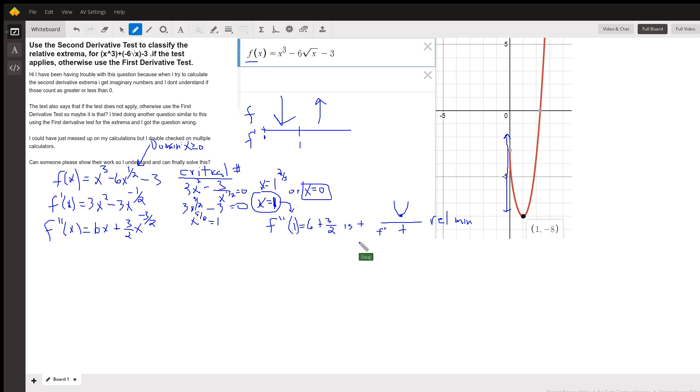But if we use the second derivative test, we'll put 1 into the second derivative, and we get 6 plus 3 halves. 1 to the negative 1 half is just 1.